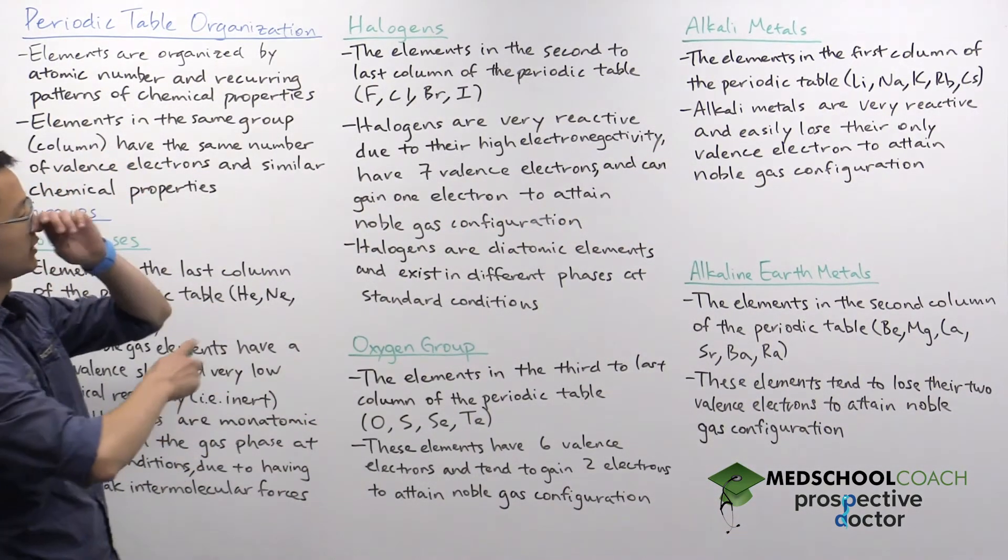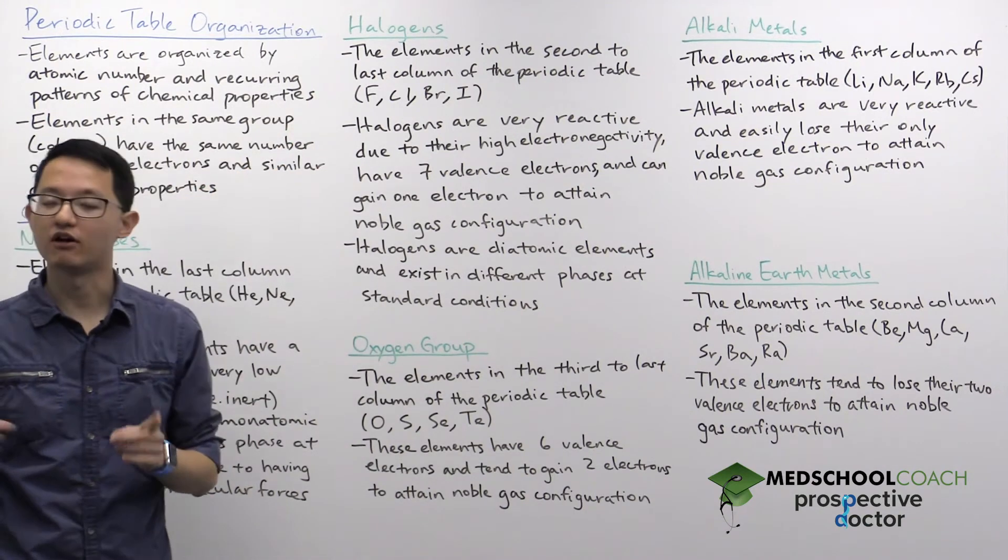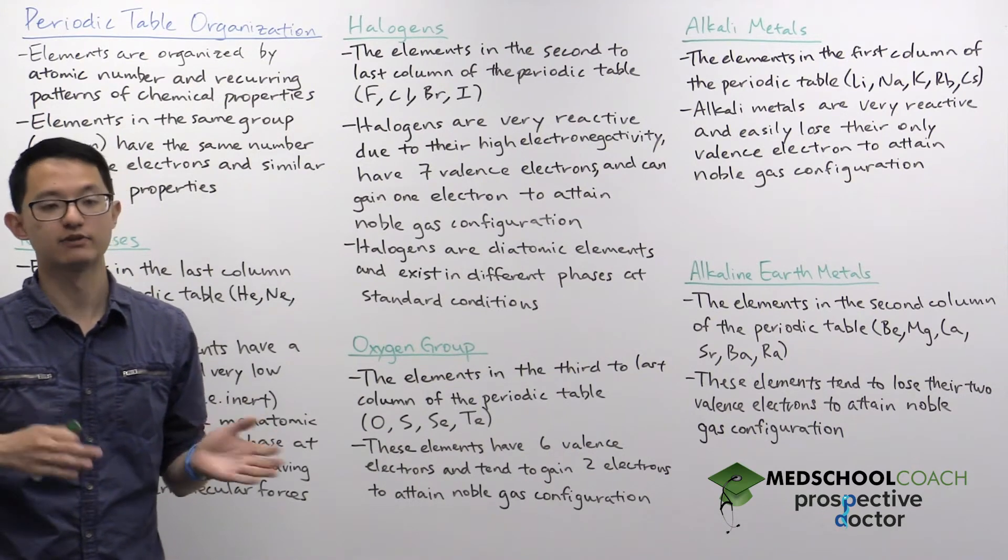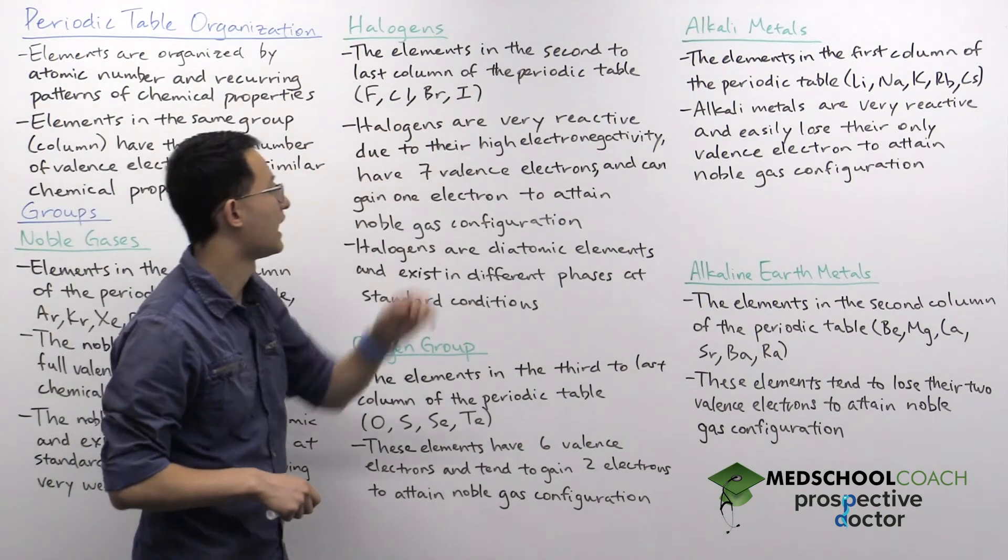Okay, so let's take a look at our next group, the halogens. The halogens is just one column to the left of the noble gases or the second to last column on the periodic table. This includes fluorine, chlorine, bromine, and iodine.